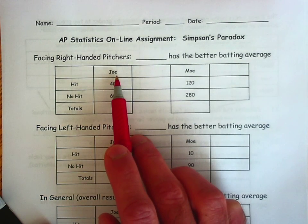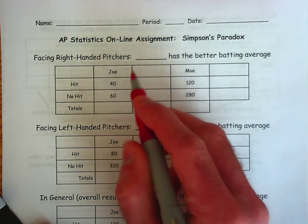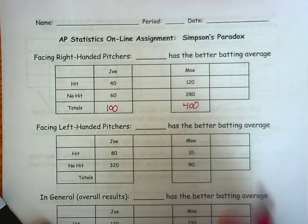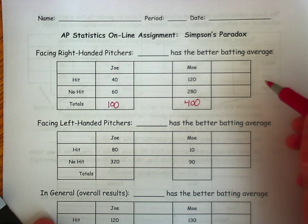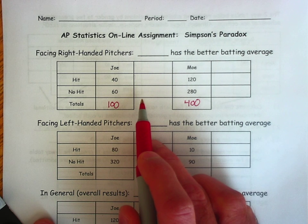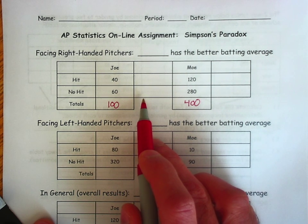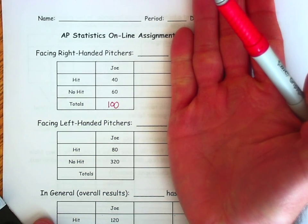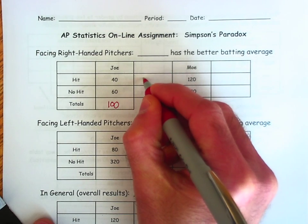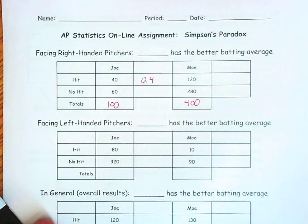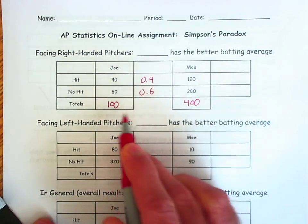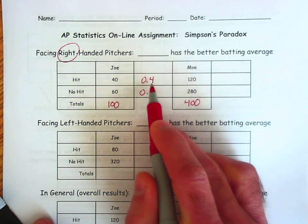The baseball players are Joe and Mo. Joe has a total of 100 at-bats. Mo has a total of 400 at-bats — those are our column totals. We really don't need to worry about the row total or the table total because I'm really just worried about these conditional distributions. Looking at only Joe, he hit 40 out of 100 pitches — that would be 0.4. So 60 out of 100 is 0.6. Joe's batting average against right-handed pitchers is 0.4.